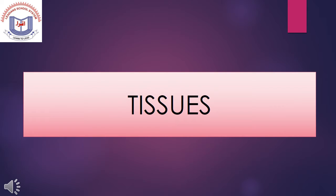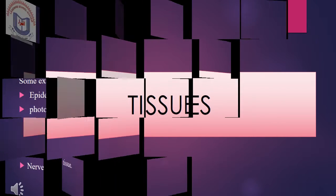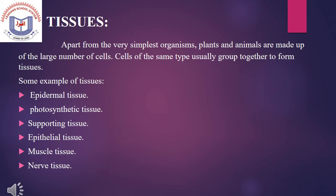About Tissues: Plants and animals are made up of a large number of cells. Some examples of tissues are epidermis tissue, photosynthetic tissue, supporting tissue, epithelial tissue, muscle tissue, and nerve tissue.